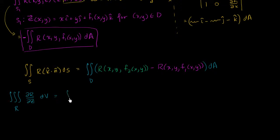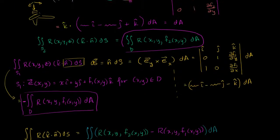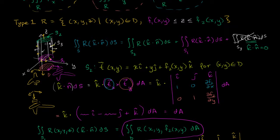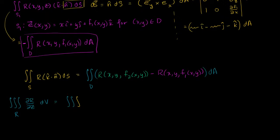We can rewrite this assuming we're going to integrate with respect to z first. The lower bound on z in our type 1 region is f1, the upper bound is f2. So we're going to integrate from f1 of xy to f2 of xy.